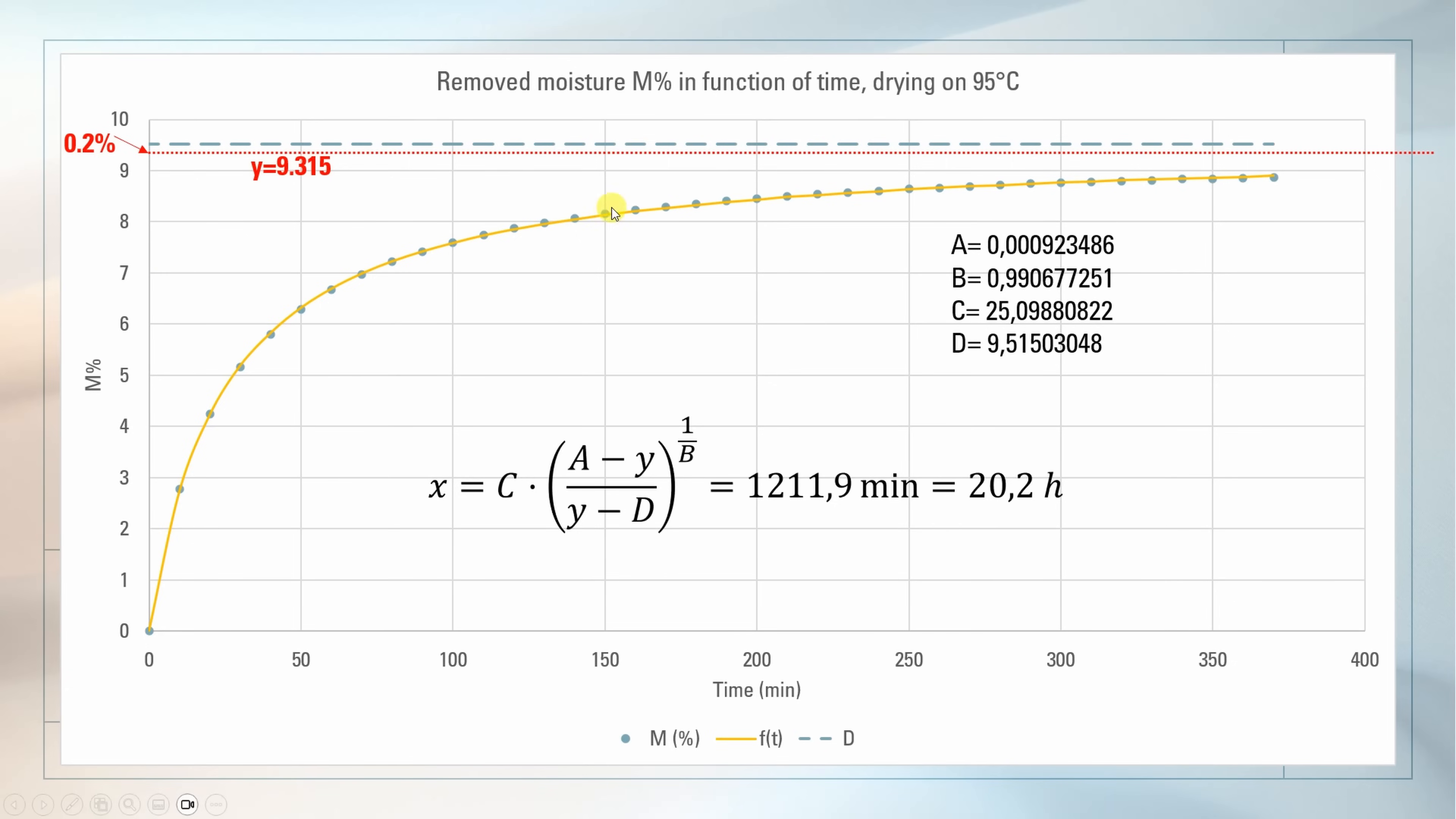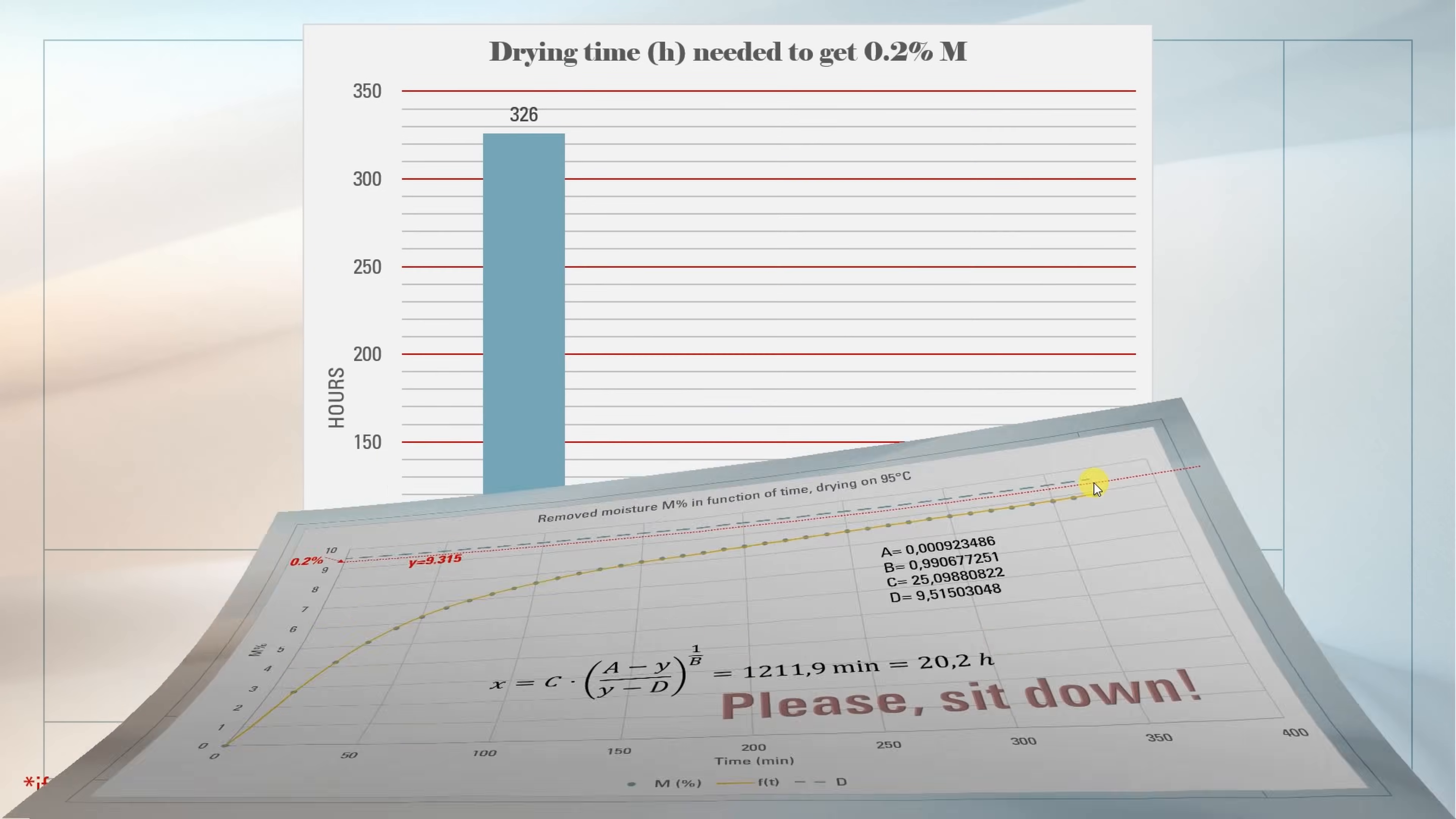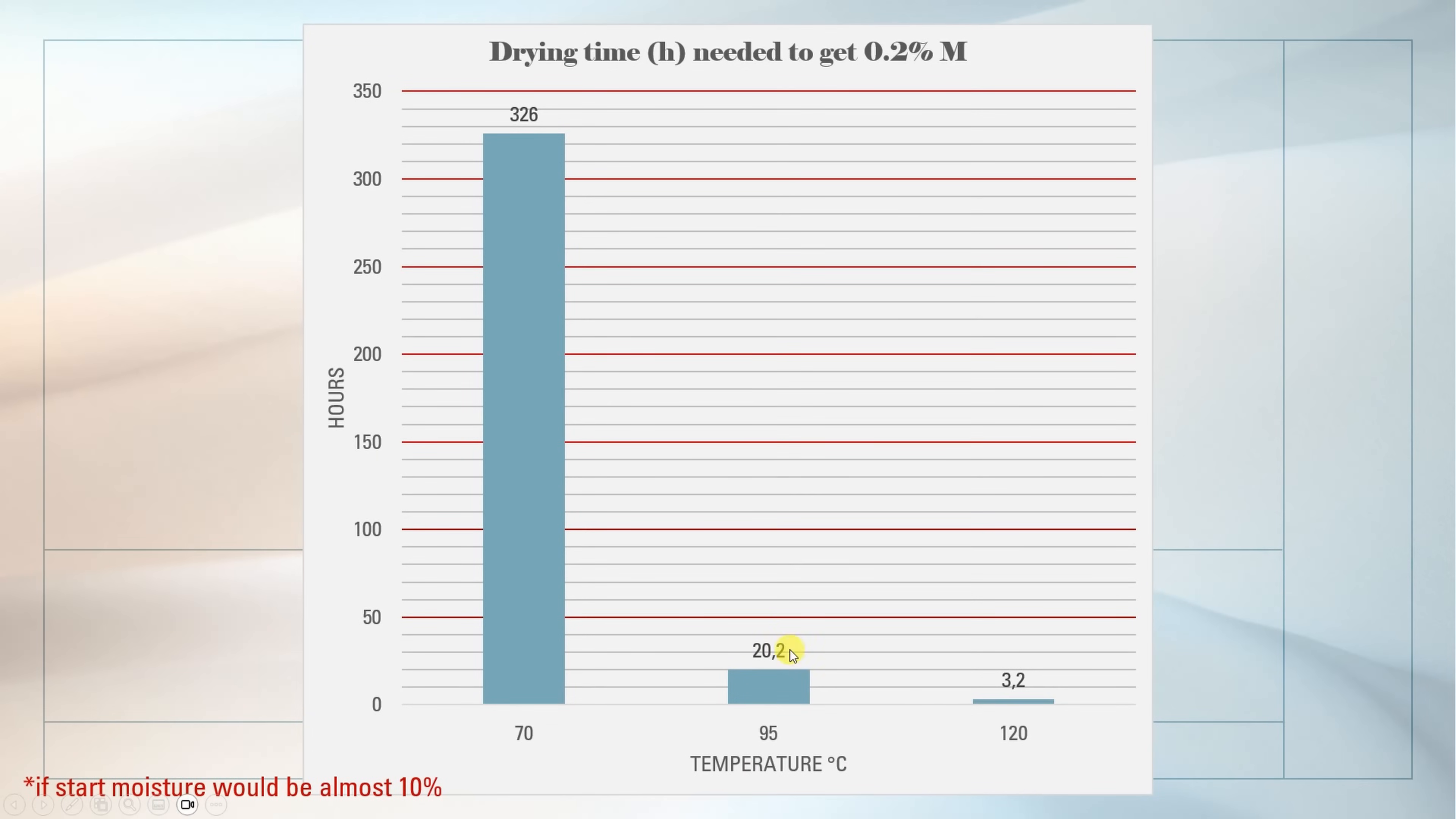In the practice, we will start drying somewhere here, so it will be a little bit better. But now, please sit down, because I will show you the values measured on 70 and 120 degrees Celsius. Okay, so this was that 20.2 hours, 95 degrees Celsius to get 0.2% of the moisture. On 120 degrees Celsius, 3.2 hours. And on 70, 326. This is more than a week. Of course, don't forget starting from almost 10% of the moisture.